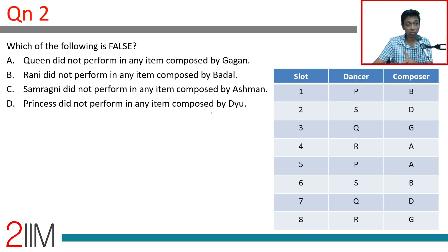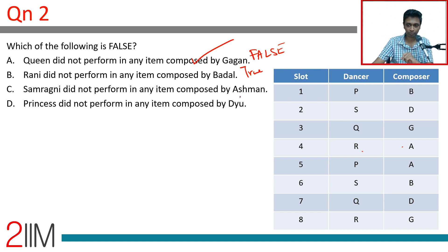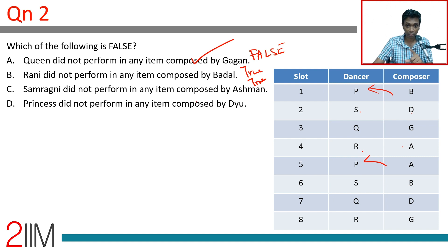Which of the following is false? Queen did not perform in any item composed by Gagan — Q was performed by Gagan, so this statement is false. She did perform, so we've got ourselves the answer: Choice A. Verifying the others: Rani did not perform in any item composed by Badal — Rani is assigned by A and G, so this is true. Samragni did not perform in any item composed by Ashman — Samragni performed by Dew and B, so true. Princess did not perform in any item composed by Dew — Princess from Badal and Ashman, so true. Statement A is false — that's our choice.